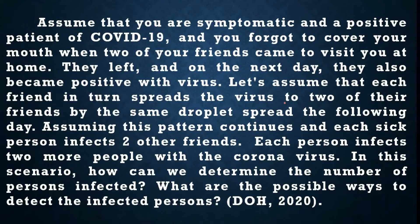Here is the geometric sequence in a real-life example. Assume that you are symptomatic and a positive patient of COVID-19, and you forgot to cover your mouth when two of your friends came to visit you at home. They left, and the next day they also became positive with the virus. Each friend in turn spreads the virus to two of their friends by the same droplet spread the following day. How can we determine the number of persons infected?